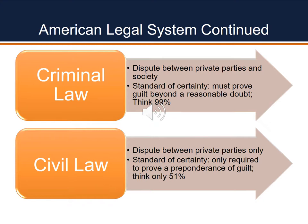Let's take a brief recap. The American legal system is made up of two types of laws: criminal law and civil law. Because of the nature of criminal law, where we have a private party versus society or the people, the court must be able to prove beyond a reasonable doubt — think the 99th percentile. In civil law we're dealing with private parties, and the standard of certainty is that we only have to prove a preponderance of guilt — think 51%.